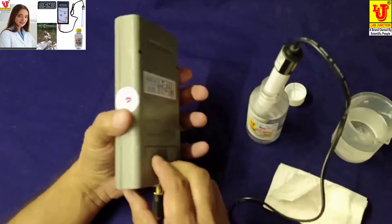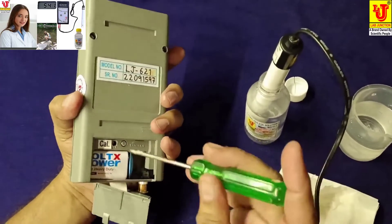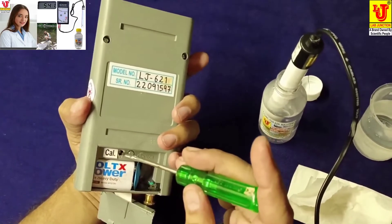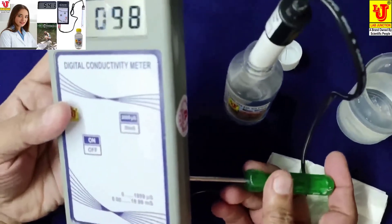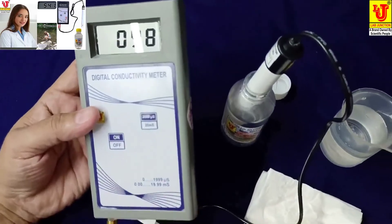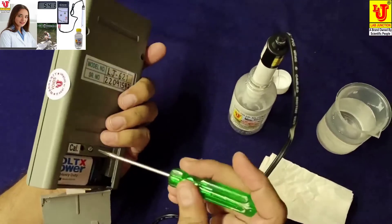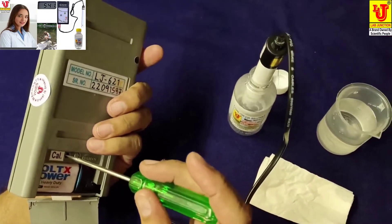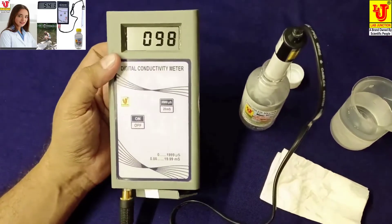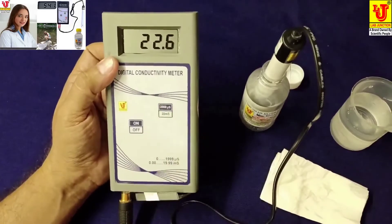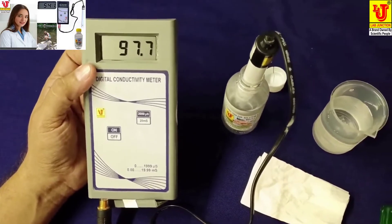If you again calibrate this, directly you can take your screwdriver, insert in this cal screw and move this and recalibrate this. Directly dip your conductivity cell in the conductivity solution and insert your screw on this cal screw and rotate to your desired value.